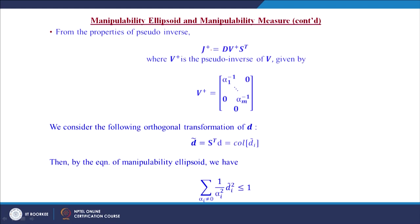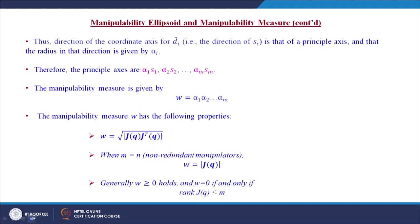From the properties of pseudo-inverse, J^+ = D V^+ S^T, where V^+ has diagonal elements 1/α1 through 1/αm. Using the orthogonal transformation D̃ = S^T D, the manipulability ellipsoid equation becomes: Σ (1/αi²) d̃i² ≤ 1. The direction of each principal axis is given by si, its radius is αi, and thus the full set of principal axes is α1·s1, α2·s2, up to αm·sm.